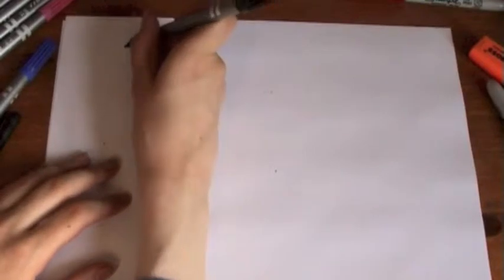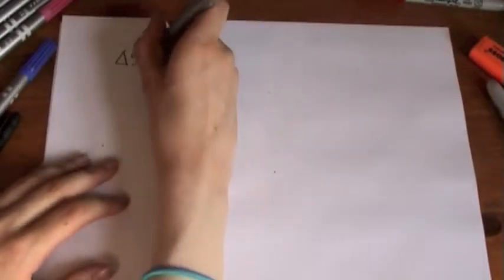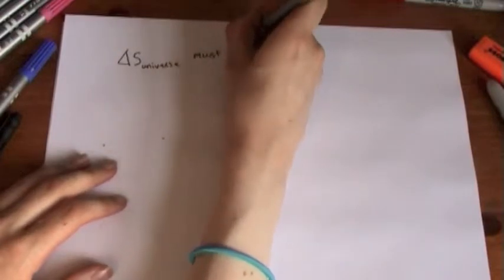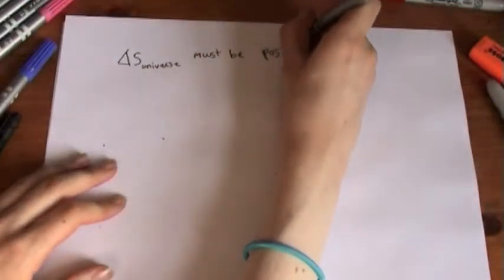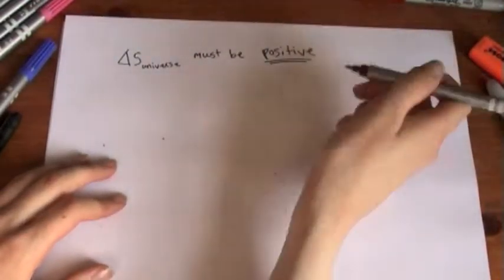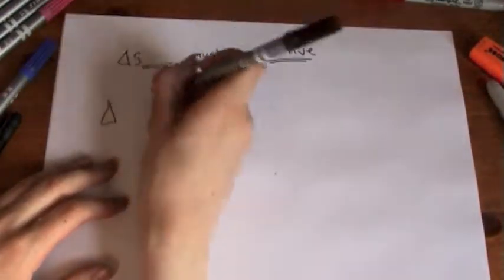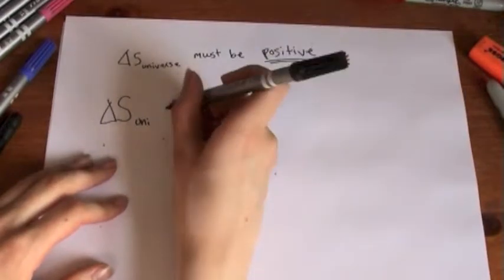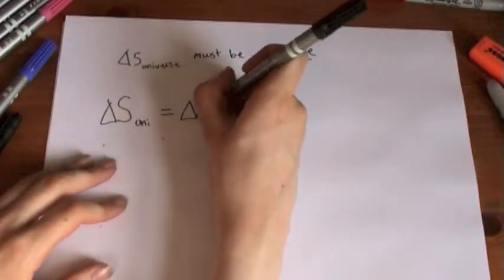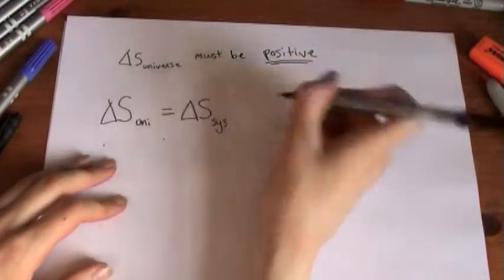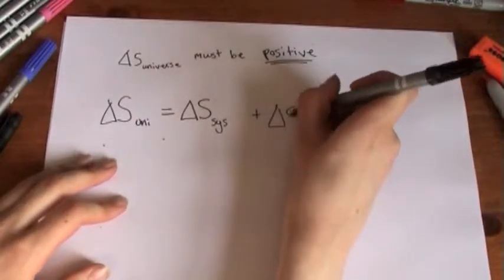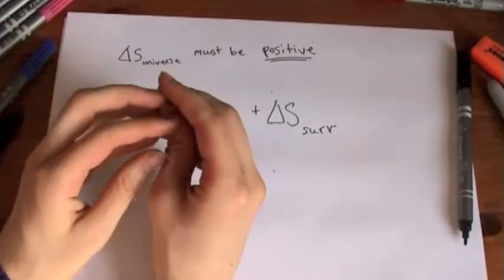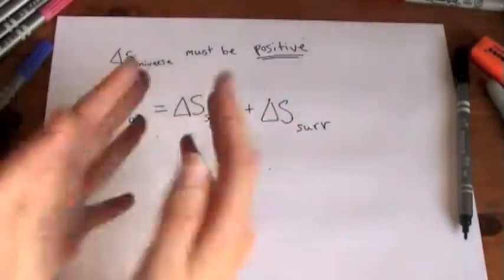The entropy of the universe, delta S must be positive if we want a reaction to go ahead. And so delta S of the universe is the sum of delta S of your system and delta S of your surroundings. And then that comprises of everything to make up the universe. Whatever's happening in your tiny system and then the rest, the surroundings.